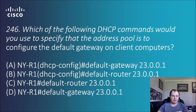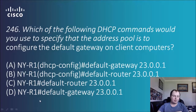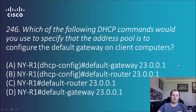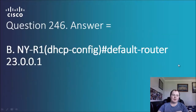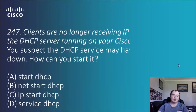The options are: DHCP config default gateway address, default router address in the same config, default router and an address, and default gateway and an address. Since we're in DHCP config mode, we can eliminate two options automatically. It comes down to simple syntax and the answer is B — 'default router' and an address. I would have figured it would be the other answer but syntactically that's the correct one.